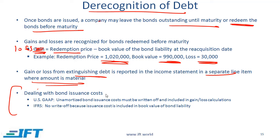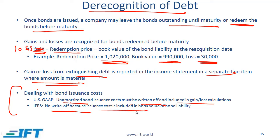When dealing with bond issuance costs on redemption: under US GAAP, when a bond is issued, the issuance cost is capitalized and then amortized over the life of the bond. If the bond is redeemed before maturity, any un-amortized bond issuance cost must be written off and included as a loss in the gain or loss calculation. Under IFRS, there is no separate write-off because the issuance cost is already included in the book value of the bond liability.